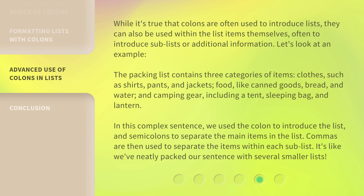In this complex sentence, we use the colon to introduce the list, and semicolons to separate the main items in the list. Commas are then used to separate the items within each sublist. It's like we've neatly packed our sentence with several smaller lists.